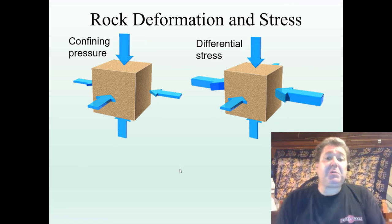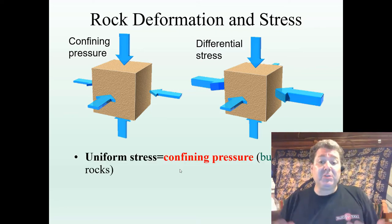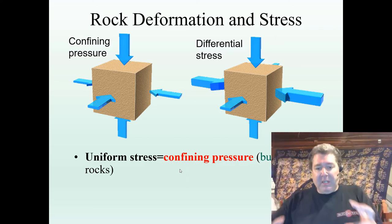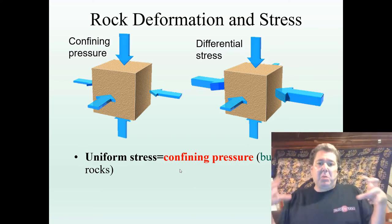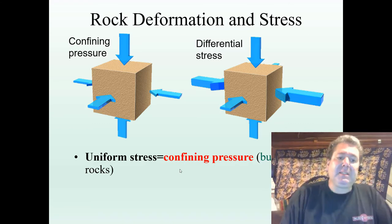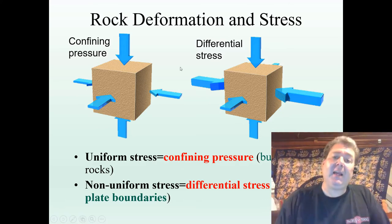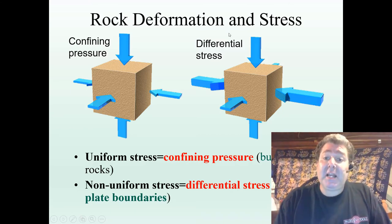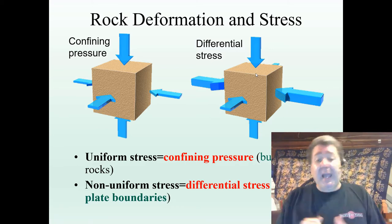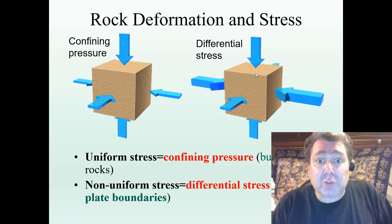There are a couple of different ways we can apply stress to a rock. The first is confining stress or uniform stress — the pressure that happens when something gets buried. Equal pressure in all directions: you become generally denser and occupy less volume. The other way is what's called non-uniform or differential stress, where one direction of stress is much more intense than the others. This is the kind of stress we are dealing with at plate tectonic boundaries.